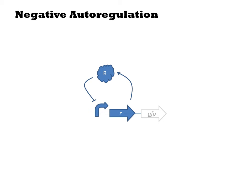The remaining circuits involve negative feedback. In negative autoregulation, we place the repressor downstream of the promoter it represses. We'll describe this one in detail later.